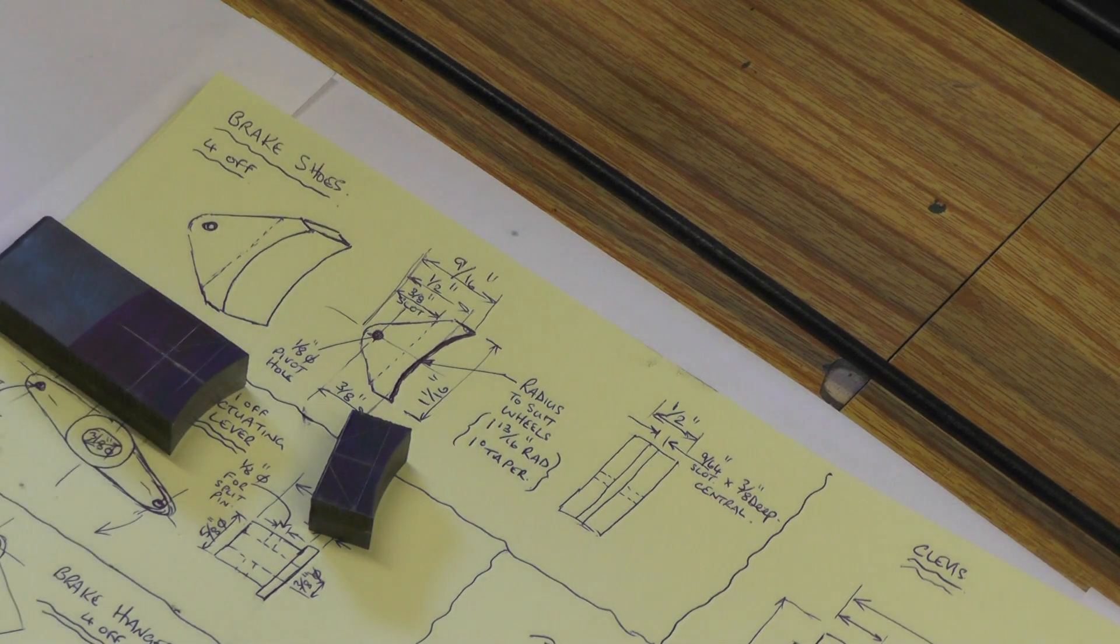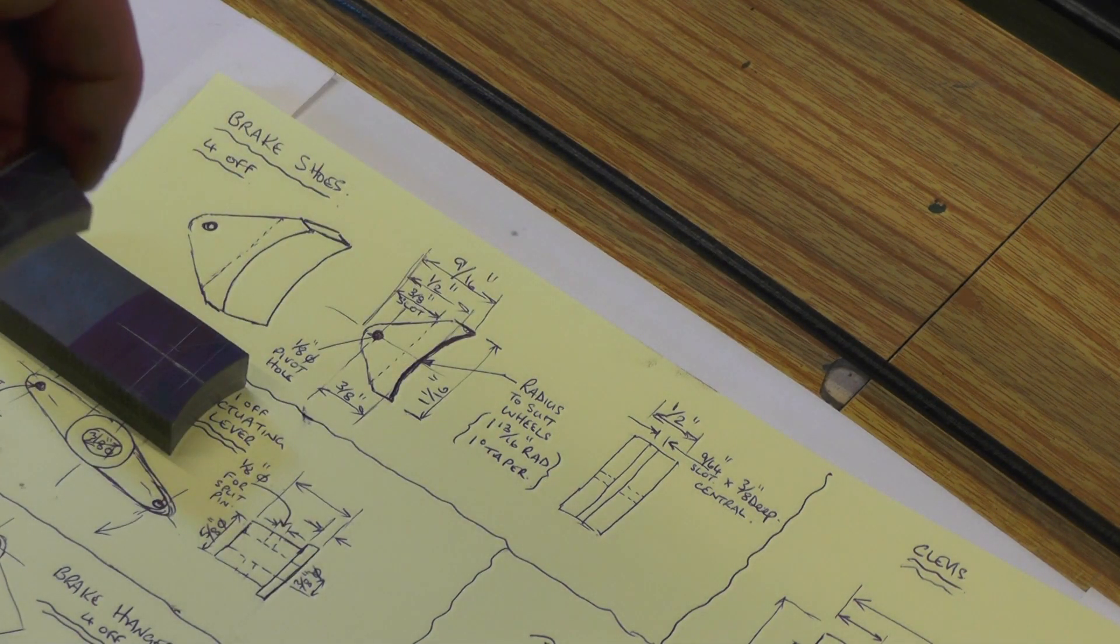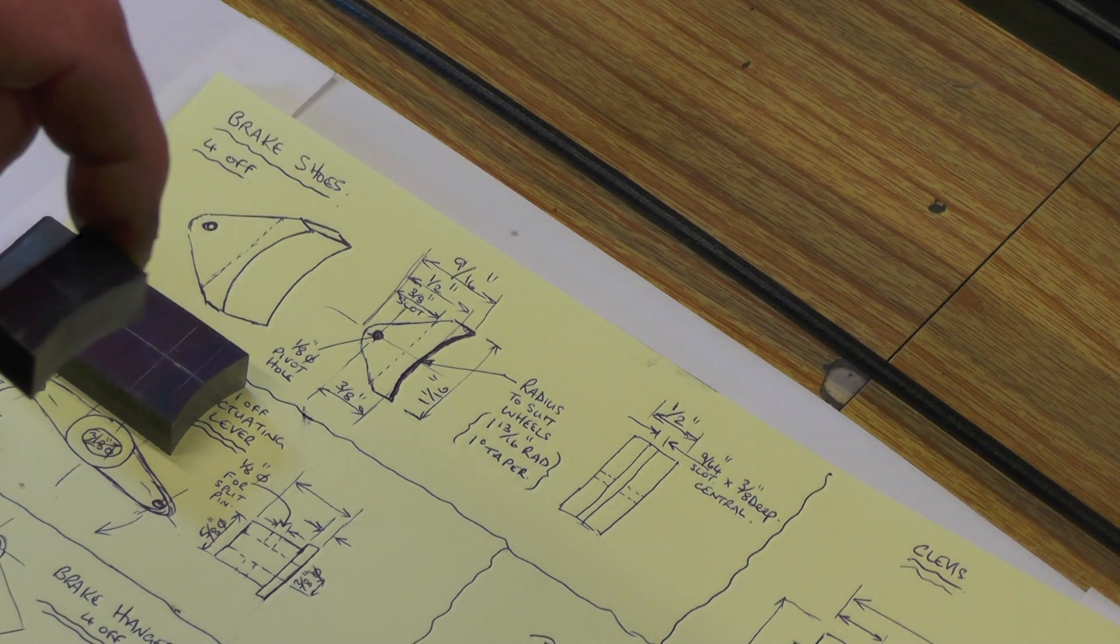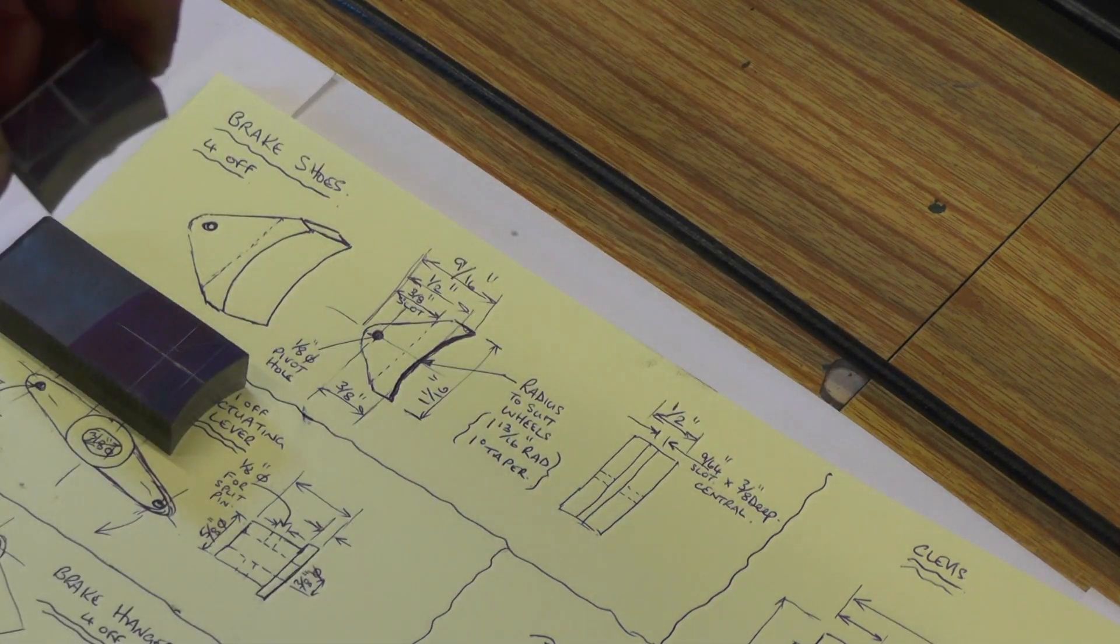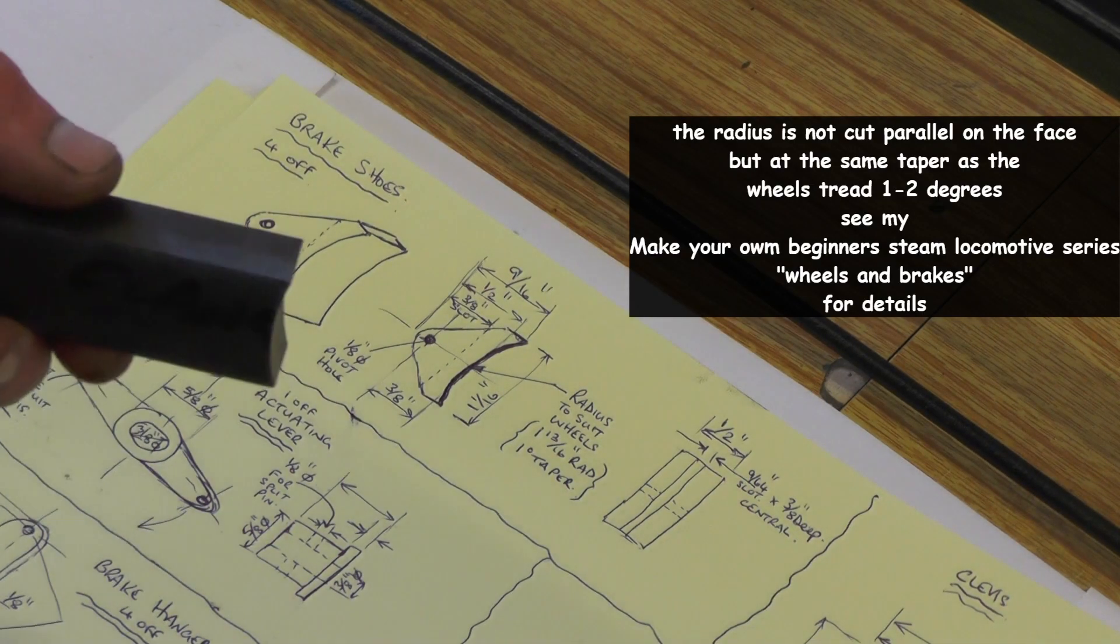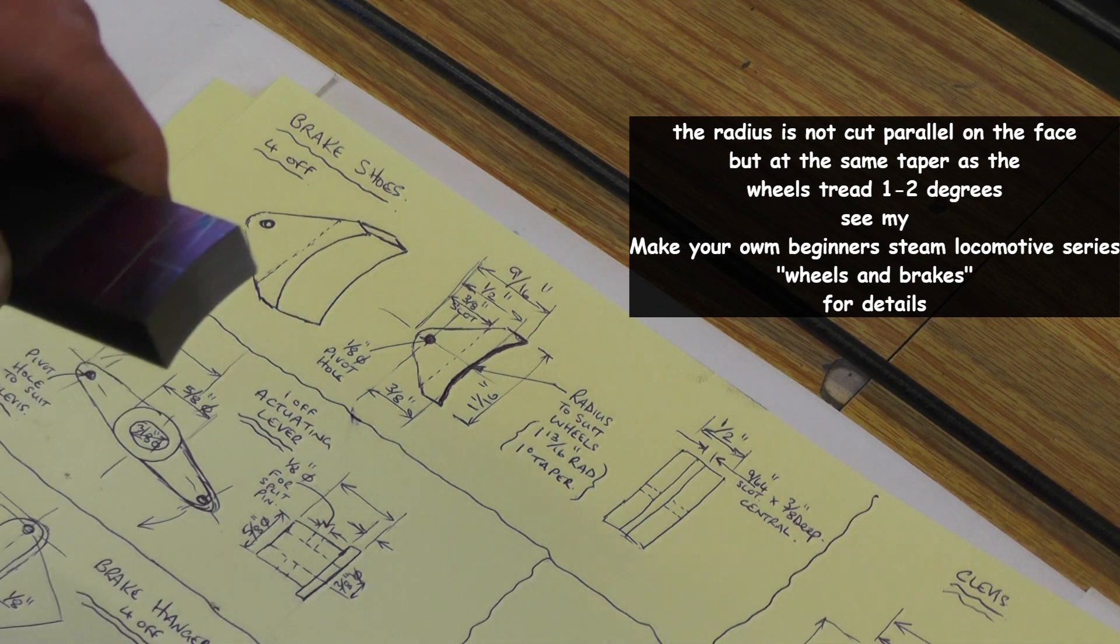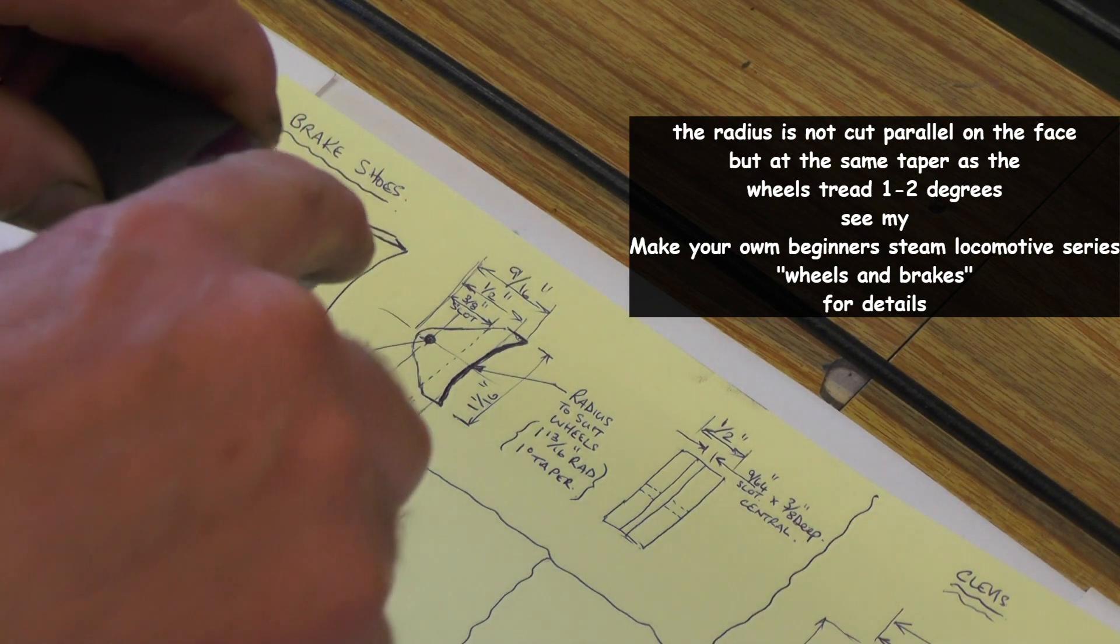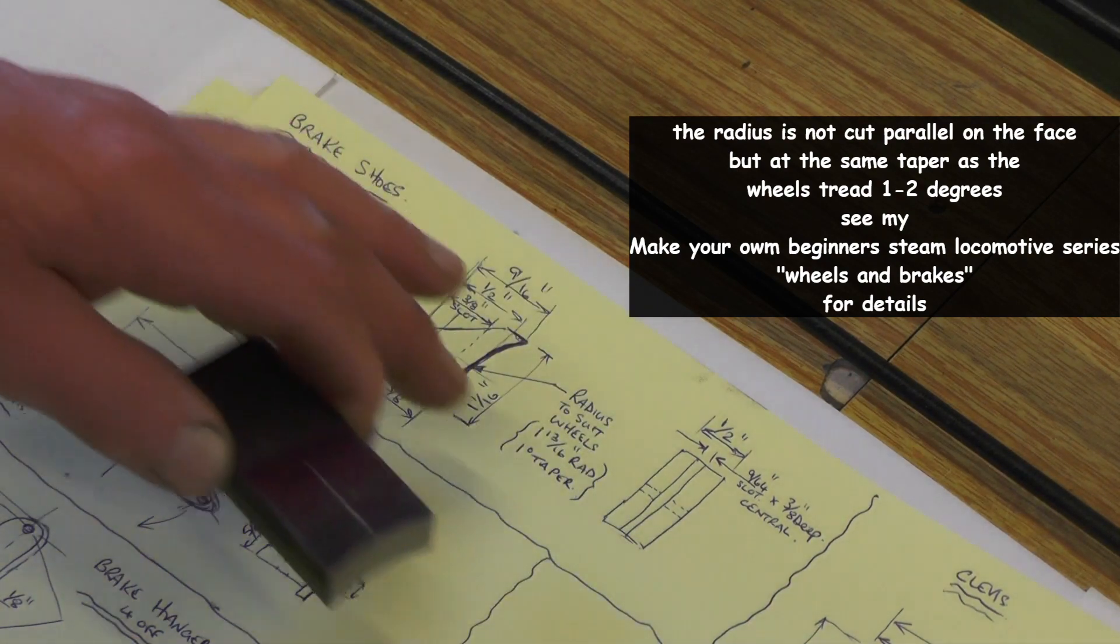I'm going to deal with brake blocks first. If you want to know in great detail how I make brake blocks, take a look back at my how to build a locomotive series. I'll put a link up somewhere and direct you to that. It'll show you my machining brake blocks. What I'm doing is I've just got this lump of cast iron and I'm going to machine the radius on the same radius as the wheels, cut it off, and then shape it to those dimensions and put the slot in for the pivot.